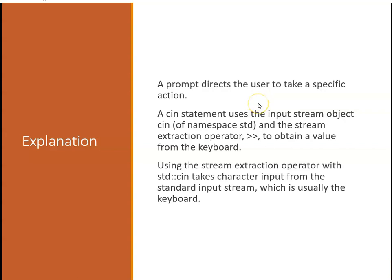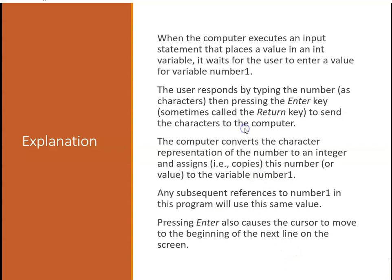One of the things we use is a prompt in our code - it directs the user to take specific action. A cin statement uses the input stream object of namespace standard and the stream extraction operator to obtain a value from the keyboard. Using the stream extraction operator with cin takes character input from the standard input, which is usually the keyboard but could be a file. When the computer executes an input statement that places a value in an int, it waits for the user to enter a value. The user responds by typing in the number and hitting enter. The computer converts the character representation of the number to an integer (the keys 1 and 2 into 12, for example) and assigns it, meaning it copies it, to the variable. Any subsequent references to that variable will use that value. Pressing enter also causes the cursor to move to the next line.